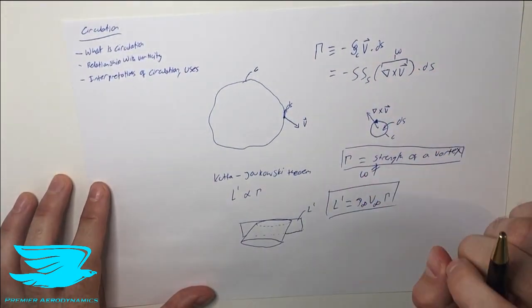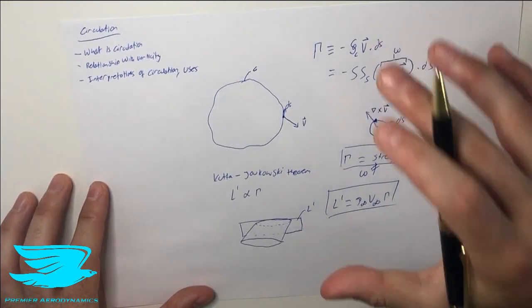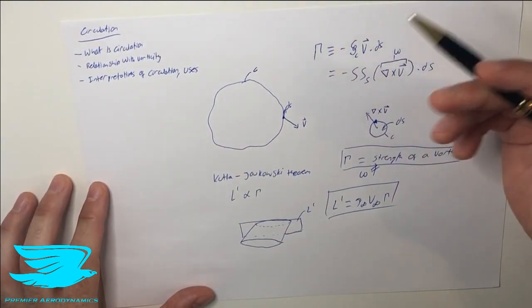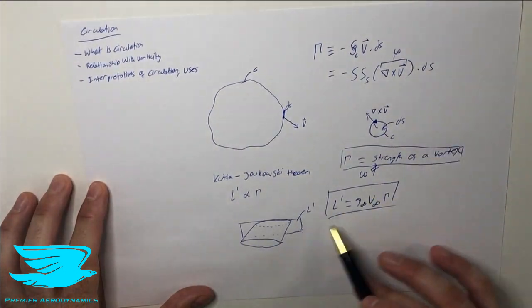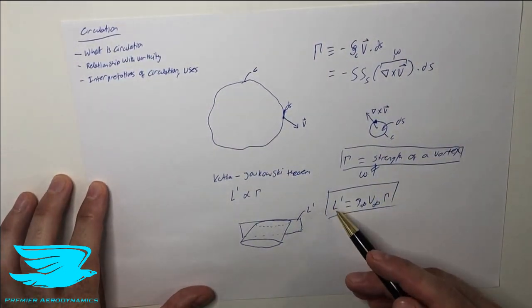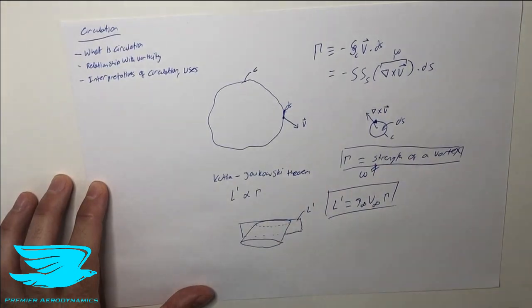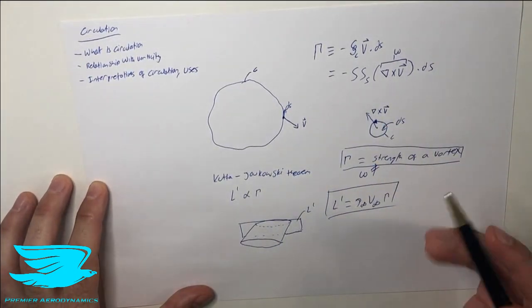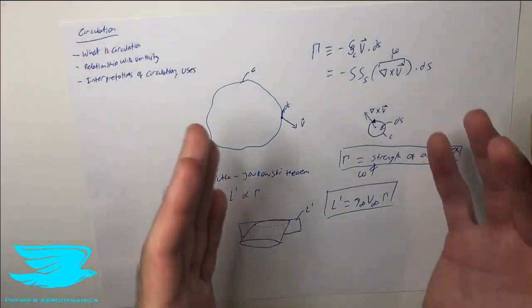There's one final thing that I want to ask, and that is, I'm going to leave this as a question for you. What happens if the circulation equals zero? We can sort of figure out with the airfoil that if the circulation is zero, it means that the lift over this particular area is zero. But what about when it comes to a vortex? If we have a circulation of zero, what does that mean for a vortex?